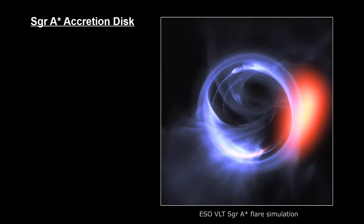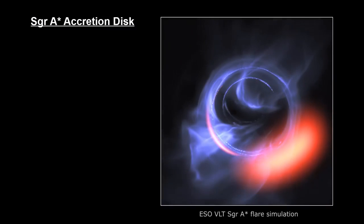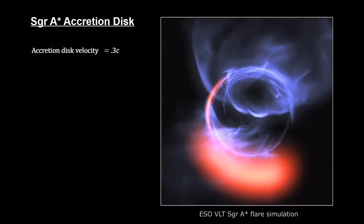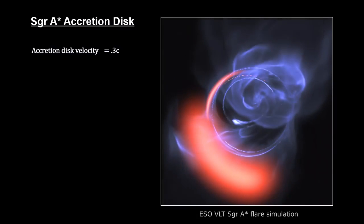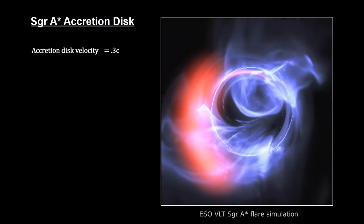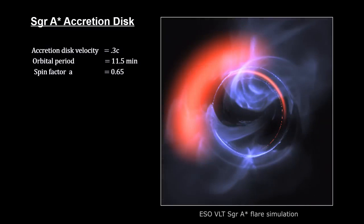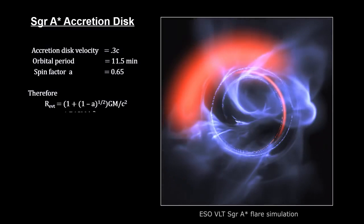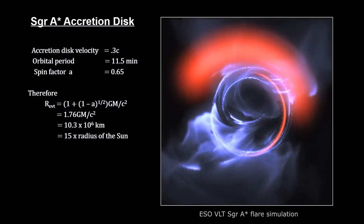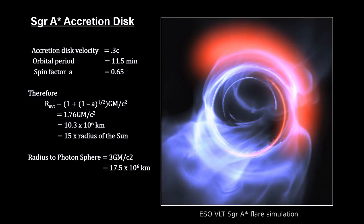In late 2018, ESO's gravity instrument observed flares of infrared radiation coming from the accretion disk around SAG A star. These flares came from clumps of gas swirling around at about 30% of the speed of light on a circular orbit just outside the event horizon. They indicate that SAG A star is spinning with a full rotation every 11 and a half minutes. This makes the 4 million solar mass SAG A star a supermassive Kerr black hole. This new information also enabled calculating the distance from SAG A star's center to its event horizon at around 10 million kilometers, or 15 times the radius of our Sun, and the distance to the photon sphere at around 17 million kilometers.